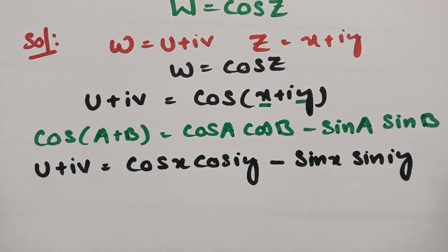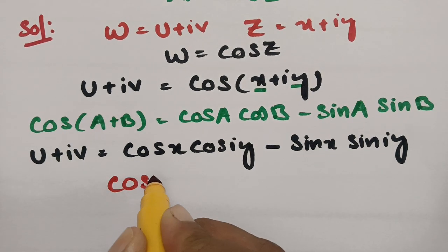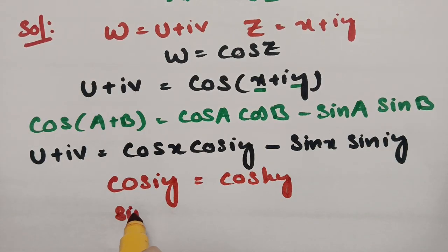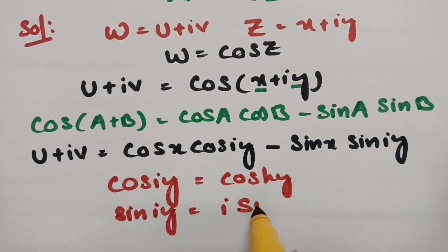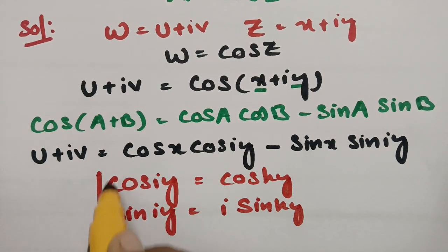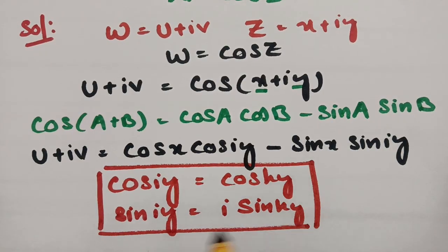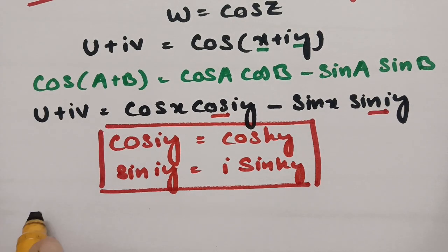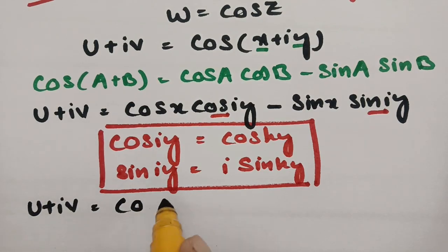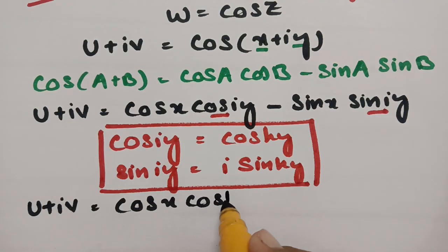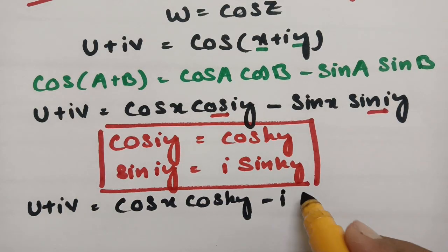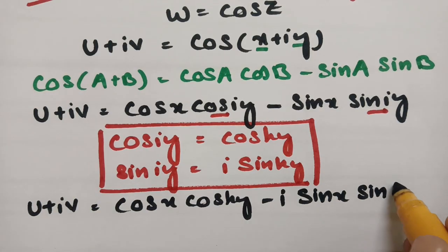We have a few formulas here: cos(iY) equals cosh Y, and sin(iY) equals i sinh Y. So in place of cos(iY) I will write cosh Y, and sin(iY) I will write i sinh Y, shifting everything into hyperbolic functions. So U plus iV becomes cos X cosh Y minus i sin X sinh Y.